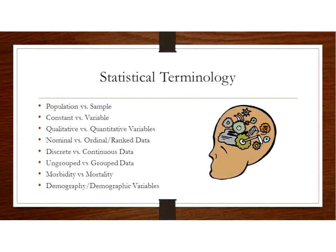Qualitative versus quantitative variables: a qualitative variable is one where the variable is being categorized using some type of characteristic, such as race or marital status — you characterize a group by a quality or characteristic. A quantitative variable is a measurable variable, like weight or height.